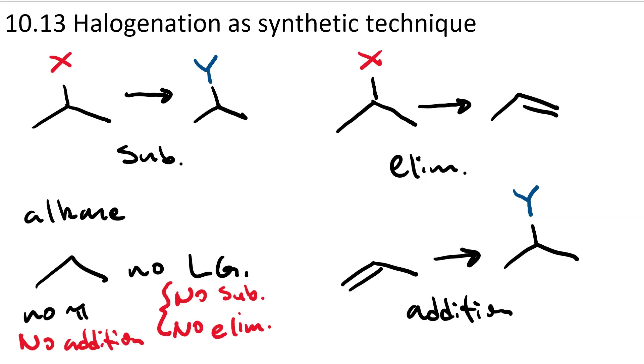Thus, before radical halogenation, the alkane was a synthetic dead end.